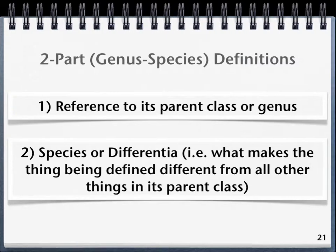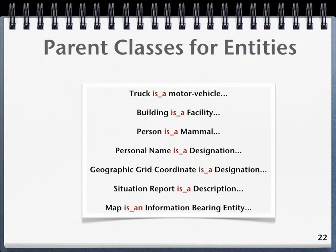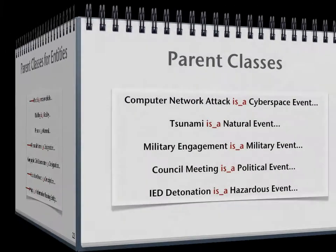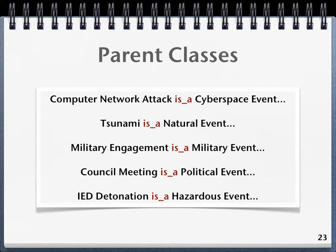Let's look at some examples. Here are some examples of parent classes for entities: a truck is a type of motor vehicle; a personal name is a type of designation; a situation report is a type of description; and a map is a type of information-bearing entity. Here are some examples of parent classes for events: a computer network attack event is a type of cyberspace event; a council meeting is a type of political event; and an IED detonation is a type of hazardous event.